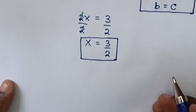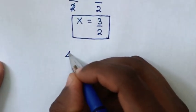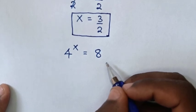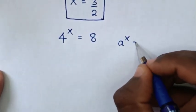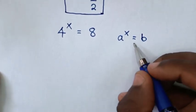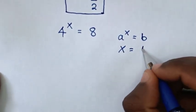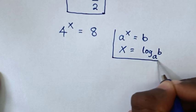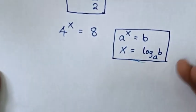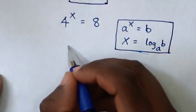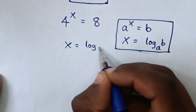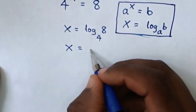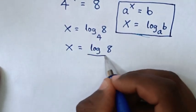Or, to solve using another method, from our equation which is 4 power x is equal to 8: this equation is in the form of a power x is equal to b. So in this form, we will apply logarithms, so it will be x is equal to log of b base a. From our equation, when we apply logarithms, it will be x is equal to log of 8 base 4. Then x is equal to log of 8 over log of 4.